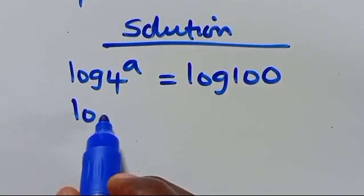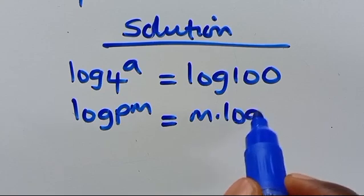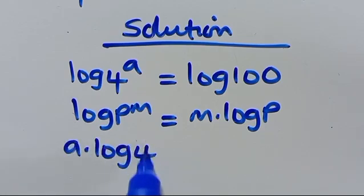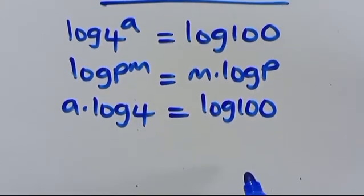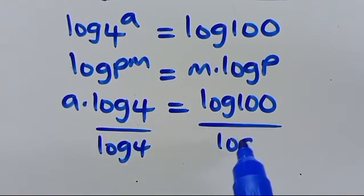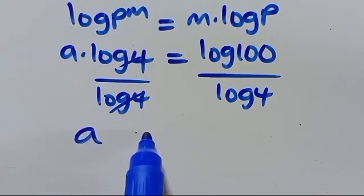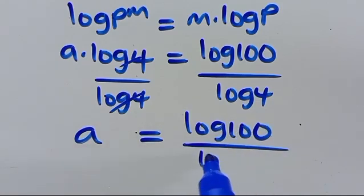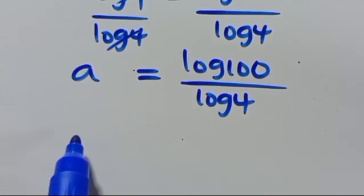Recall that log p to the power of m equals m times log p. Applying this, we have a times log 4 equals log 100. Dividing through by log 4, we get a equals log 100 over log 4.